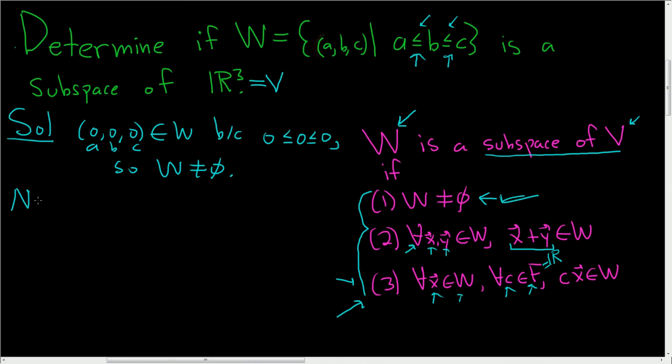So let's try to violate condition three by just making up a vector. Now we have to come up with just one vector in W and one real number such that the scalar product is not in W. If we can violate this condition just for one vector, we're done. So let's try something in W. How about (1, 2, 3). This is in W, and this is because 1 is less than or equal to 2, which is less than or equal to 3.